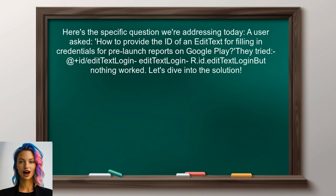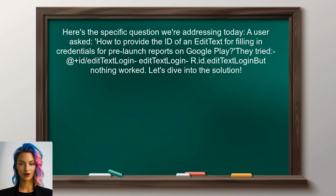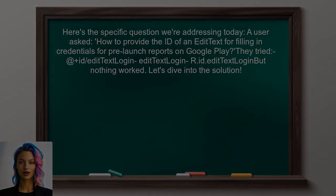Here's the specific question we're addressing today. A user asked how to provide the ID of an EditText for filling in credentials for pre-launch reports on Google Play. They tried several formats, including 'app:id/edit_text_login', 'edit_text_login', and 'R.id.edit_text_login', but nothing worked. Sound familiar? Let's dive into the solution.